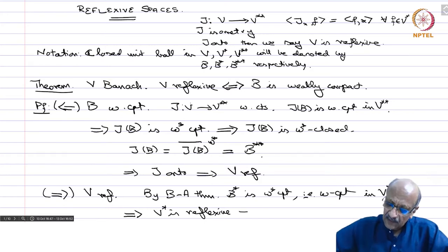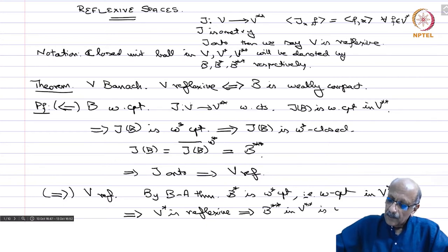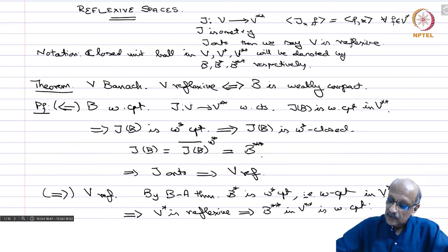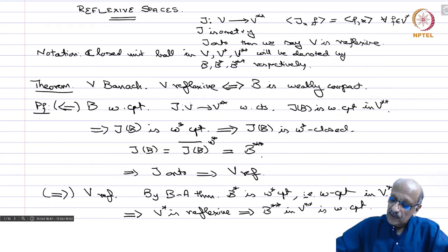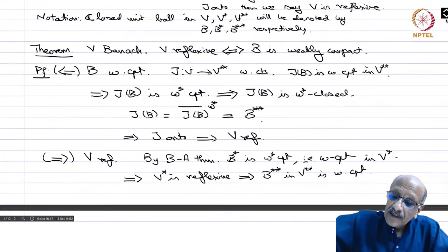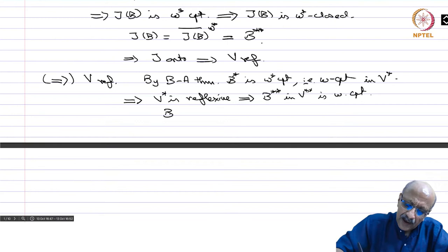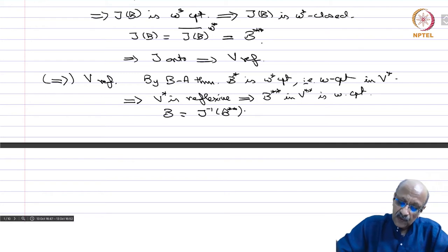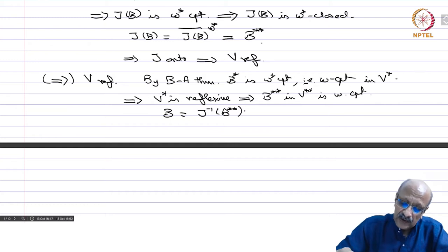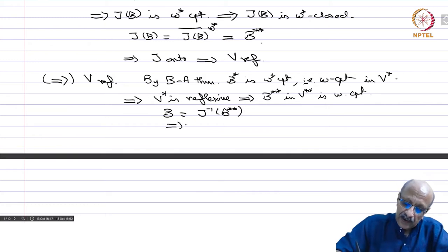If V star is weakly compact, by the previous arguments this shows V star is reflexive. If V star is reflexive, then B double star in V double star is weakly compact, because in V double star the weak and weak-star topologies coincide. Therefore B double star by Banach-Alaoglu is weak-star compact and therefore weakly compact. Then B is nothing but J inverse of B double star because V is reflexive, and J and J inverse are isometries, so they are continuous and hence weakly continuous. Consequently B is weakly compact.